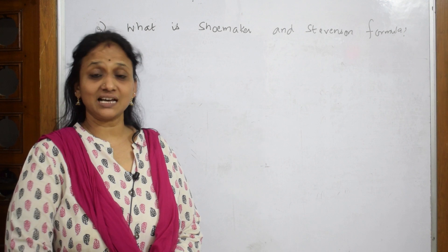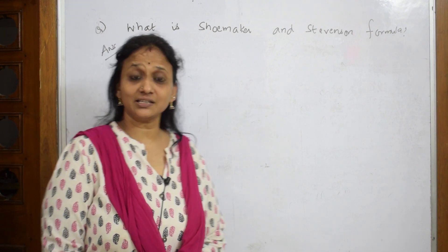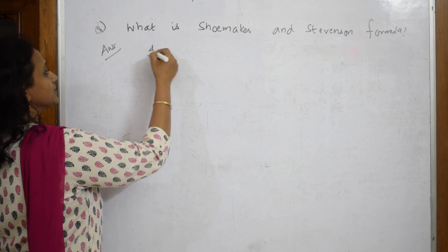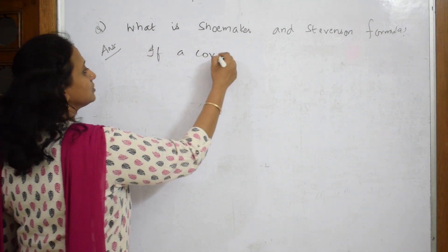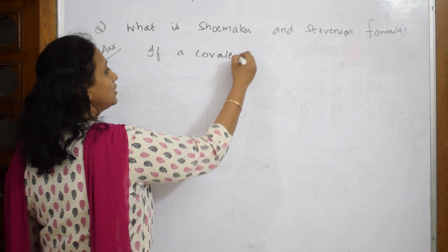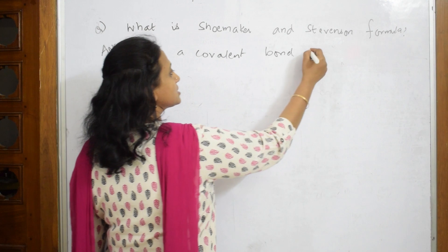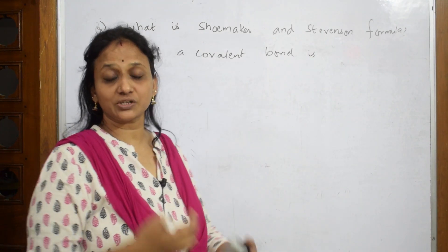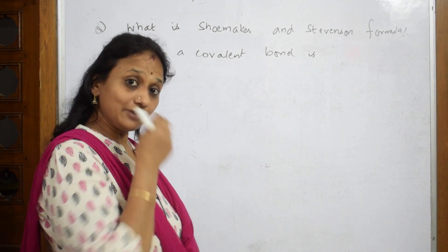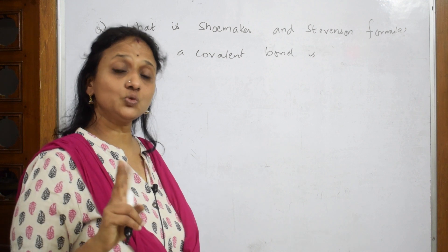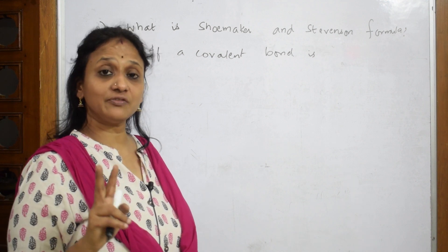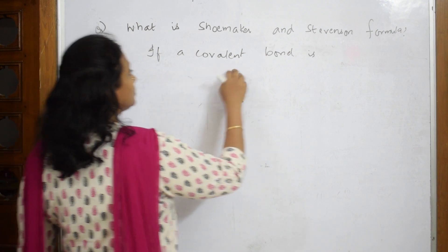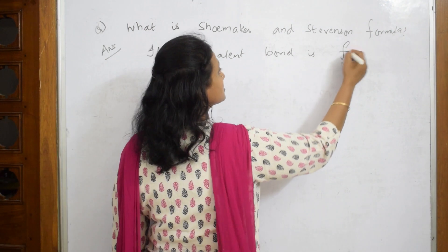Suppose a covalent bond is formed — when is the covalent bond formed? When there is sharing of electrons. And if this covalent bond is formed between two elements which have an electronegativity difference, that is the key concept here.